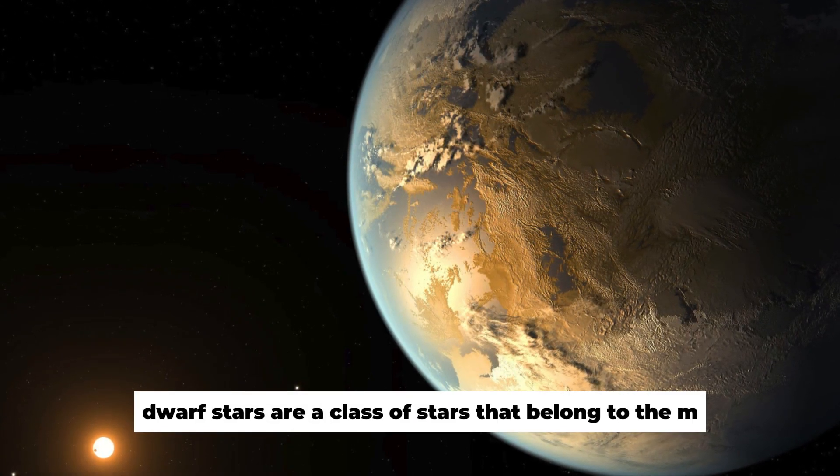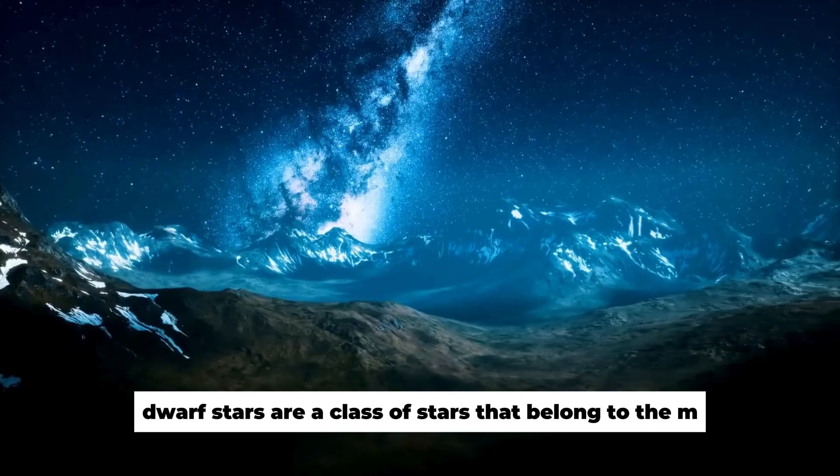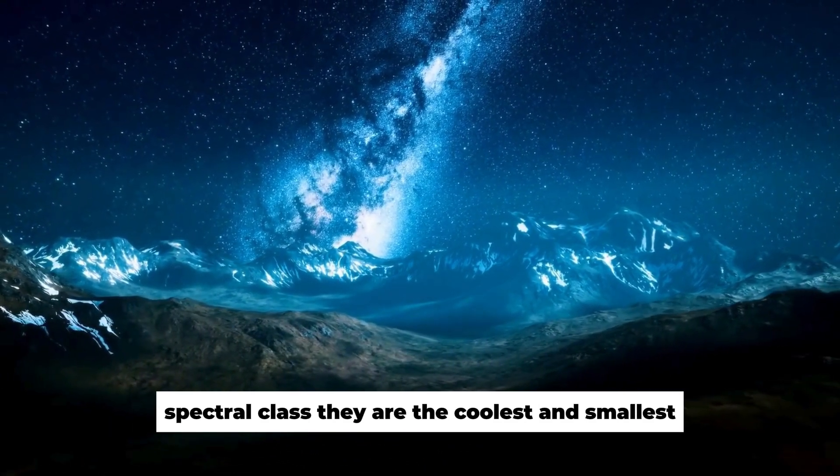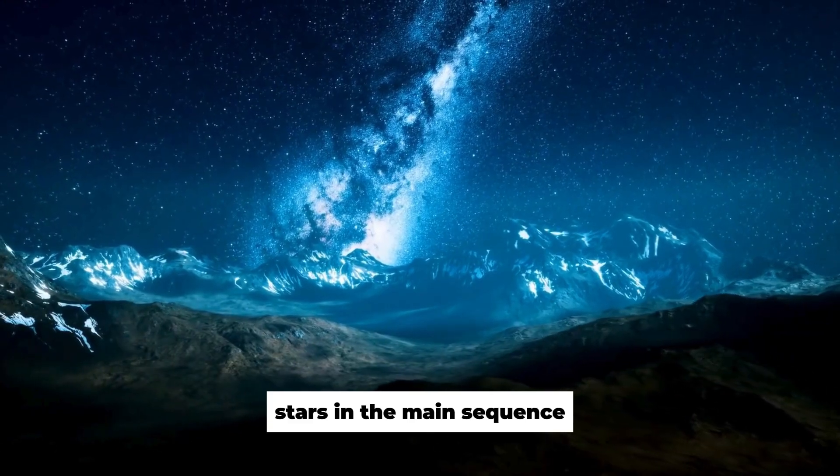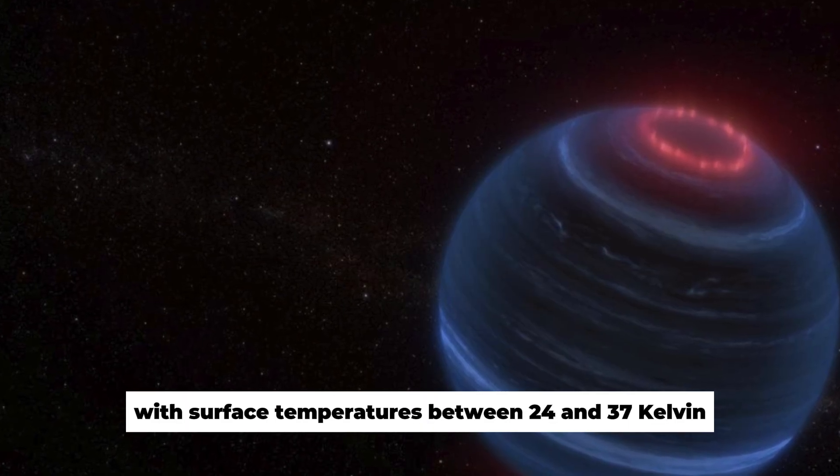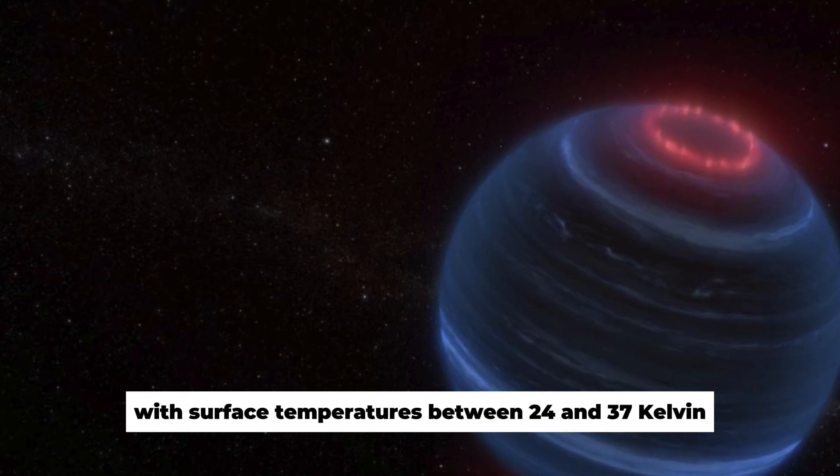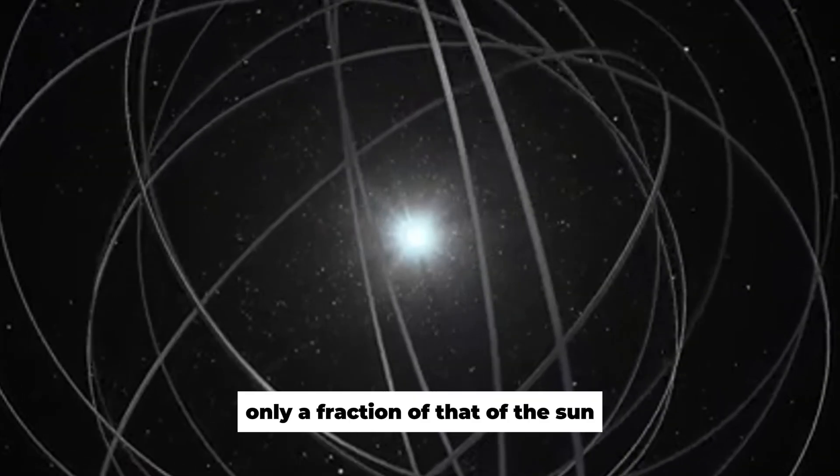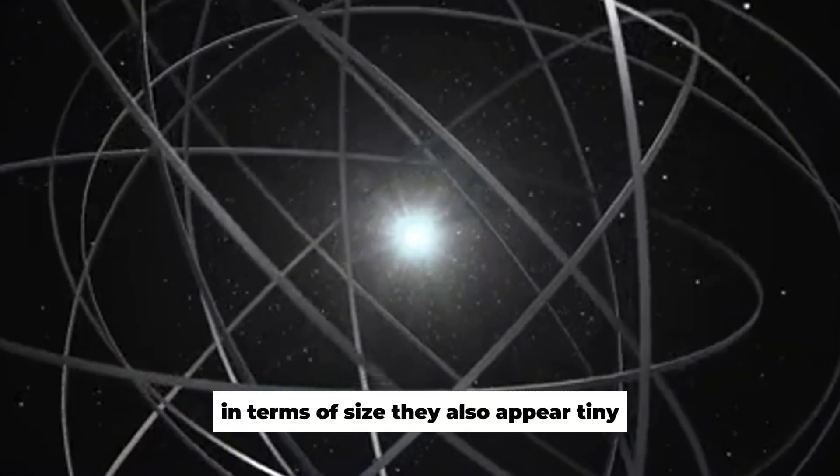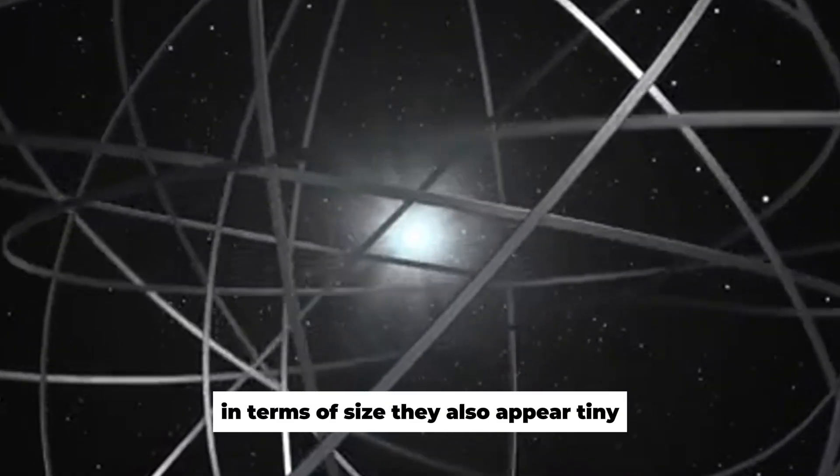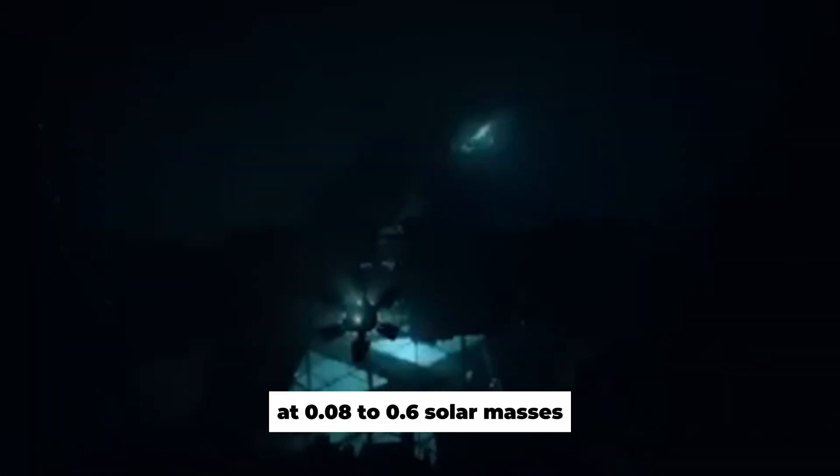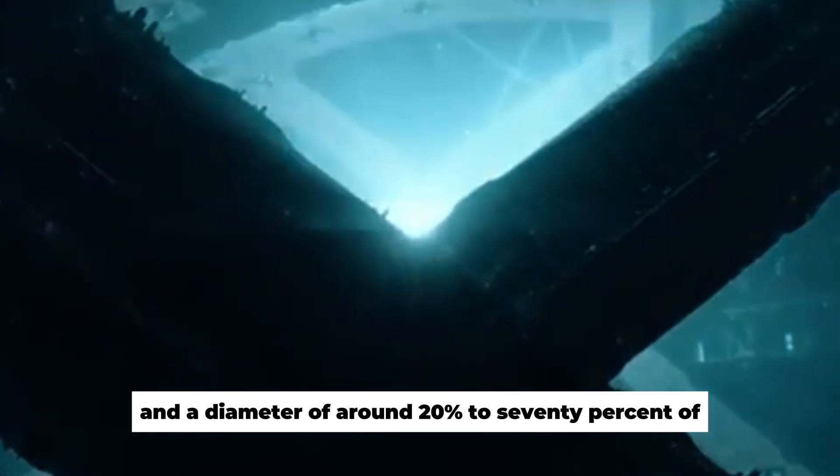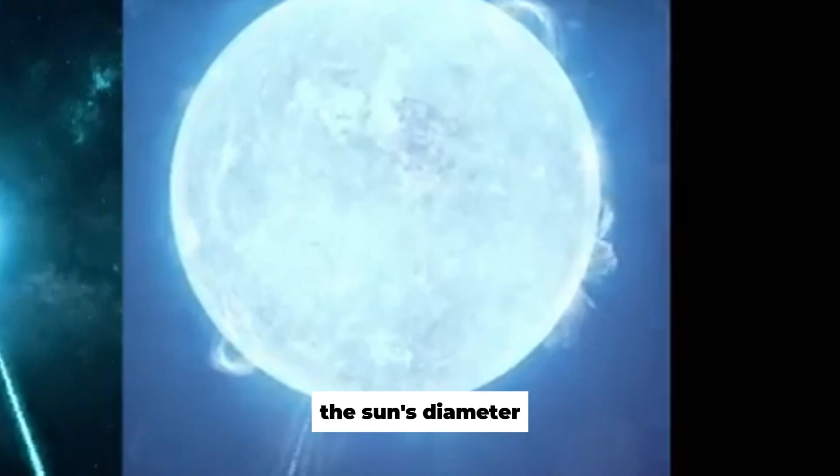M dwarf stars are a class of stars that belong to the M spectral class. They are the coolest and smallest stars in the main sequence, with surface temperatures between 2400 and 3700 Kelvin and a brightness that is often only a fraction of that of the Sun. In terms of size, they appear tiny at 0.08 to 0.6 solar masses and a diameter of around 20% to 70% of the Sun's diameter.